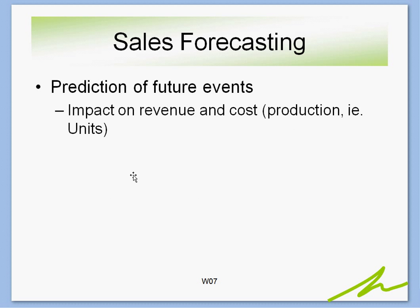The most common type of forecast is a sales forecast, which is a prediction of future events. Specifically, we're looking at revenue and how that revenue impacts our cost of production in terms of units — either units of products made or units of services delivered, such as how long it takes to complete a tax return or file a brief for a lawyer.